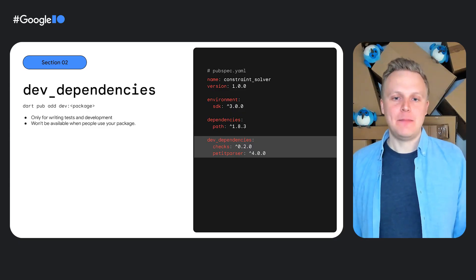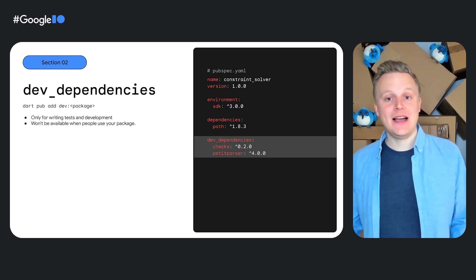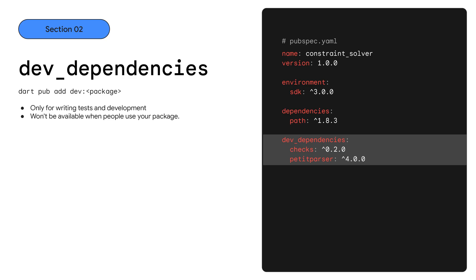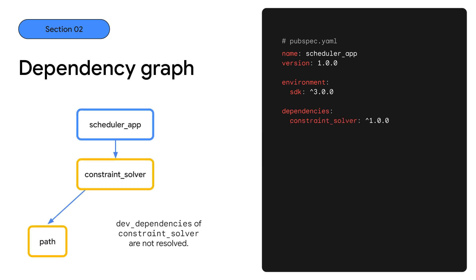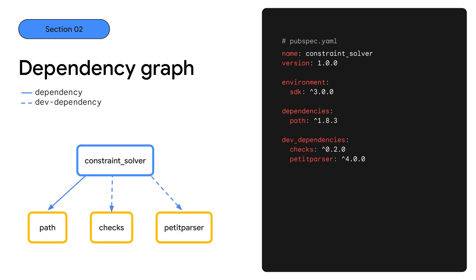We can also add dev dependencies. Dev dependencies can only be used for testing and development. When someone takes a dependency on your package, they won't be installing your dev dependencies. For example, we've added checks and petite parser as dev dependencies to the constraint solver package. If we look at the dependency graph of the scheduler app that depends on constraint solver, the dependency graph won't include the dev dependencies of constraint solver. But if we're working on constraint solver where it is the root project and resolving its dependencies, we'll get a dependency graph that includes the dev dependencies.